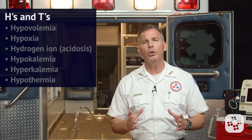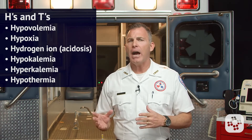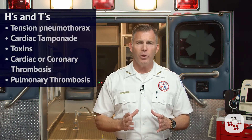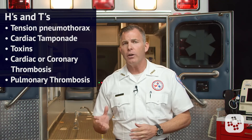Once initial treatments have been started, it's important to ask the team to consider why this patient went into asystole by reviewing the reversible H's and T's. These include hypovolemia, hypoxia, hydrogen ion (acidosis), hypo- or hyperkalemia, tension pneumothorax, cardiac tamponade, toxins, and cardiac or coronary thrombosis.